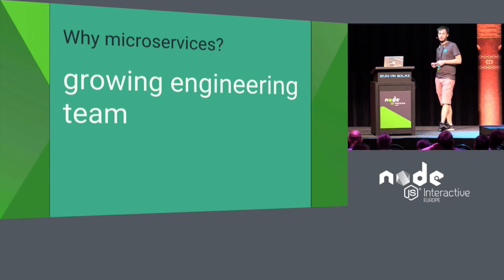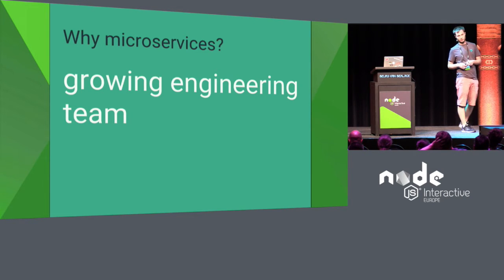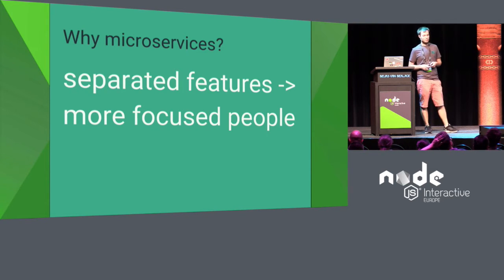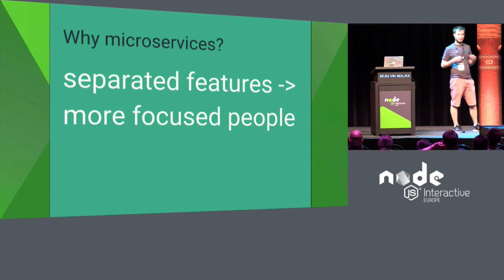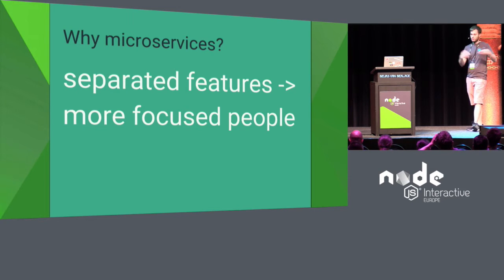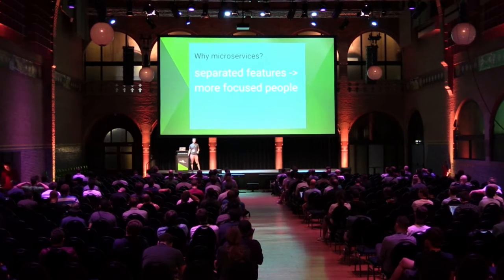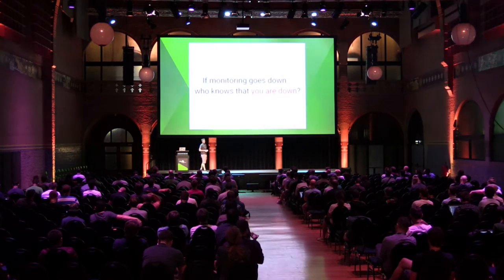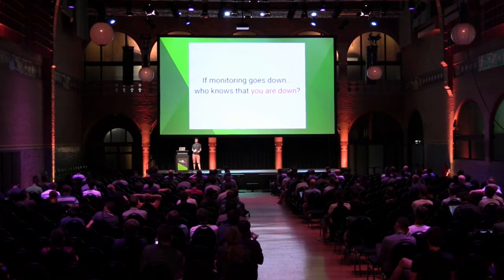So why did we move to microservices? First, our engineering team was growing, and based on our experience, larger teams work less efficiently. We also wanted separated features with more focused people — specialists in a specific field. Our application has different features like memory monitoring and distributed tracing, and if everybody has to know everything it's usually less focused. We also needed fault tolerance, because if your monitoring goes down, you need to be the one telling users they're down.